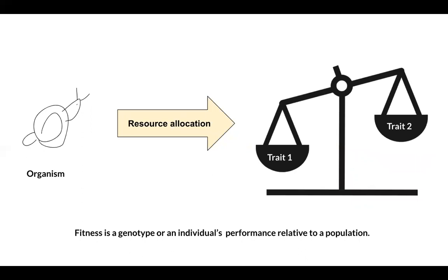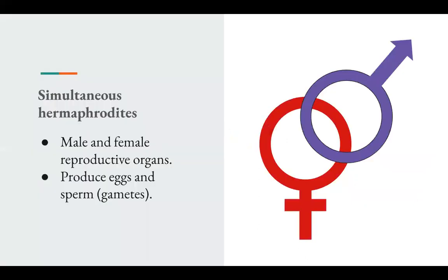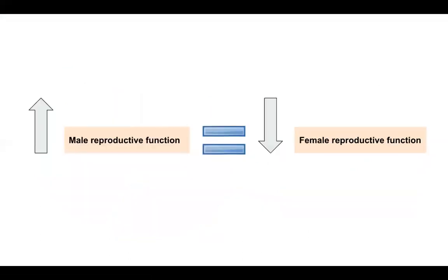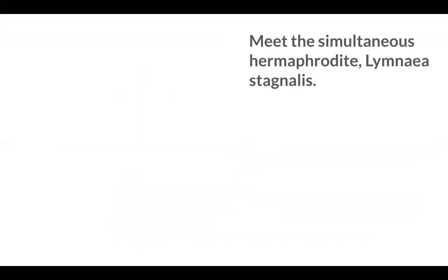But what is a simultaneous hermaphrodite and how are trade-offs significant to them? A simultaneous hermaphrodite is an organism with both male and female reproductive organs. It produces both gametes — eggs and sperm. Therefore, their resources are divided between male and female reproductive function, like the balance between paying for food and bills. Investment into one sexual function leads to decreased investment in the other.